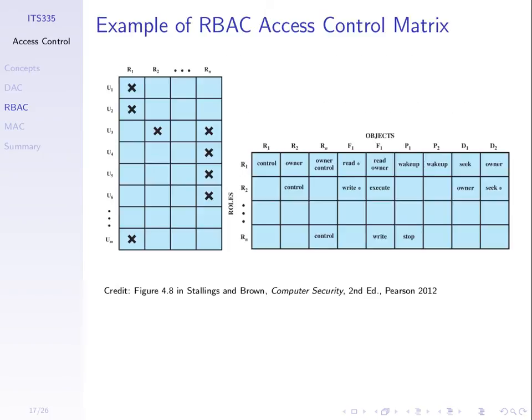We can use an access control matrix to map users to roles and roles to objects—the next slide gives a simple example. We need two tables. The first maps users to roles: rows are users (U) and columns are roles (R). In this example, role 1 has three users—user 1, user 2, and user M. Role 2 has one user. User 3 can take two roles: role 2 or role M. So we map users to those roles, and there can be more than one user per role.